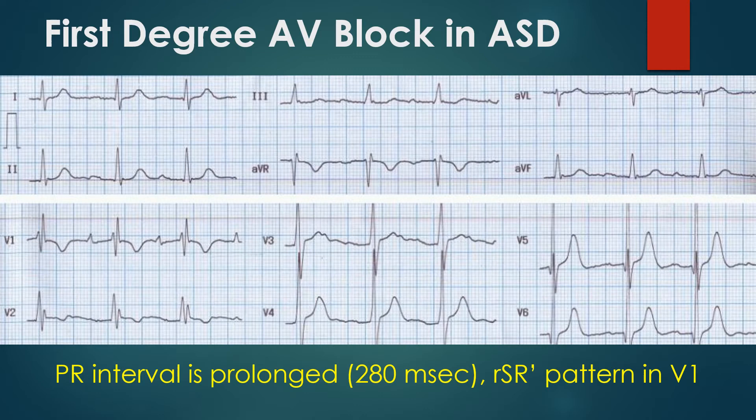This combination of first-degree AV block with incomplete right bundle branch block pattern is seen in familial atrial septal defect, which is transmitted in an autosomal dominant pattern. This means that 50% of first-degree relatives have a chance of having atrial septal defect.